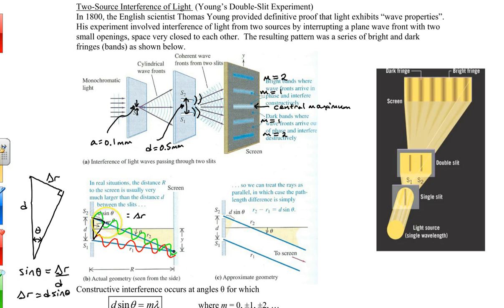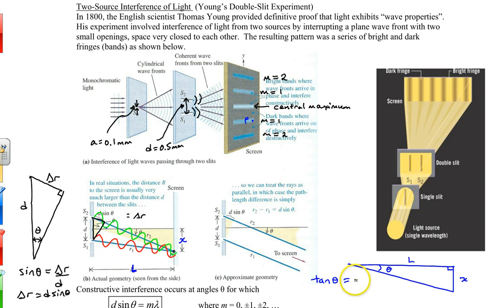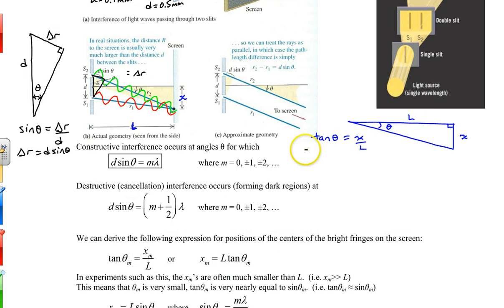Similarly, we can draw another triangle using the distance from the slits to the screen, which we call L, and the distance from the central fringe to the bright fringe at point P, which we call x. This angle is also theta. So we can write another trig formula: tan theta equals x over L.